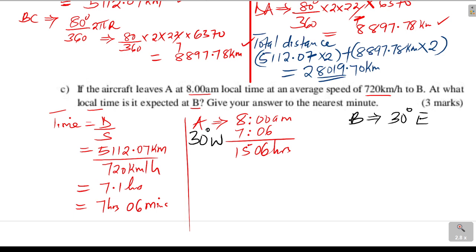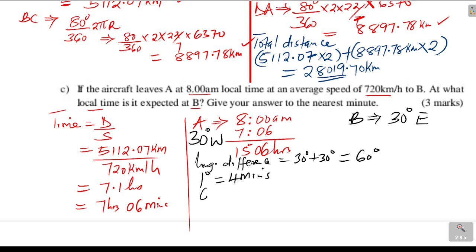The longitude difference between A (30 degrees west) and B (30 degrees east) is 30 plus 30 equals 60 degrees. For every 1 degree there is a difference of 4 minutes, so 60 degrees gives 60 times 4 equals 240 minutes, which is equivalent to 4 hours. Places to the east are always ahead in time, and B is to the east, so B is 4 hours ahead of A.